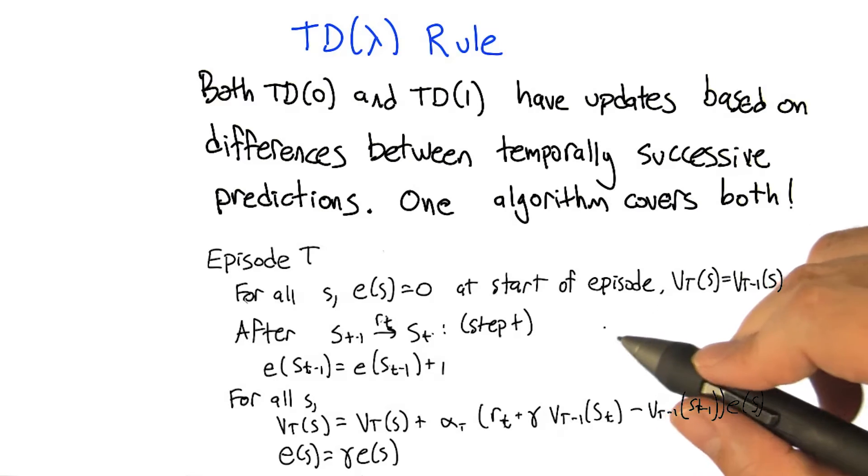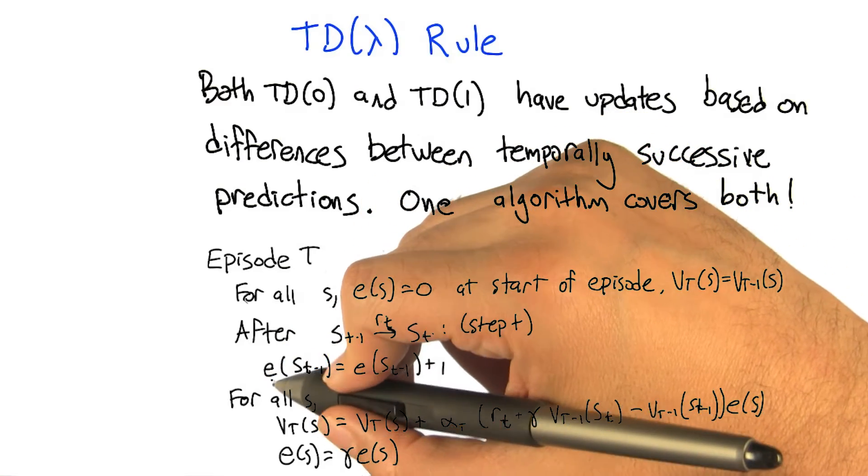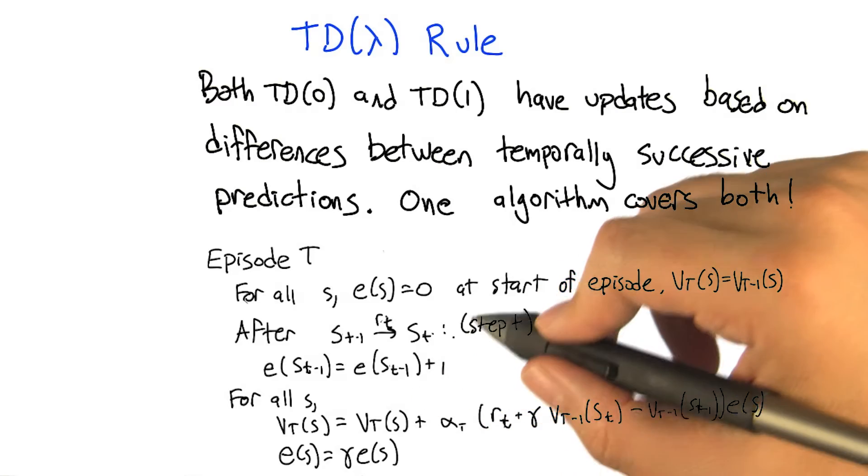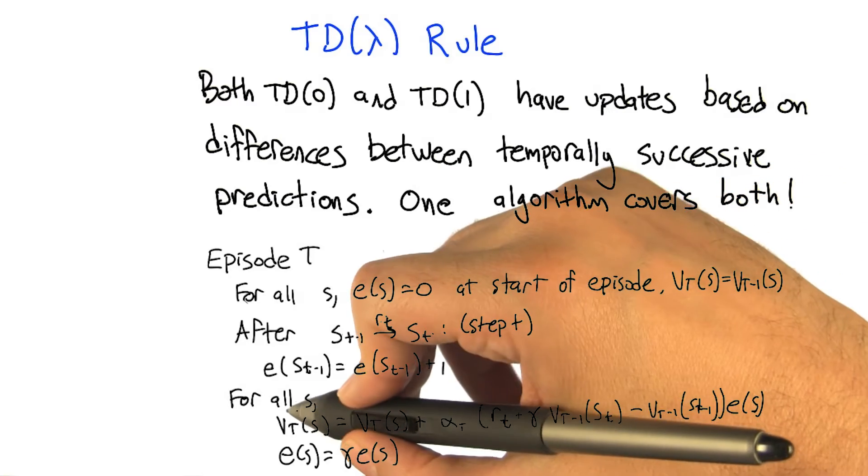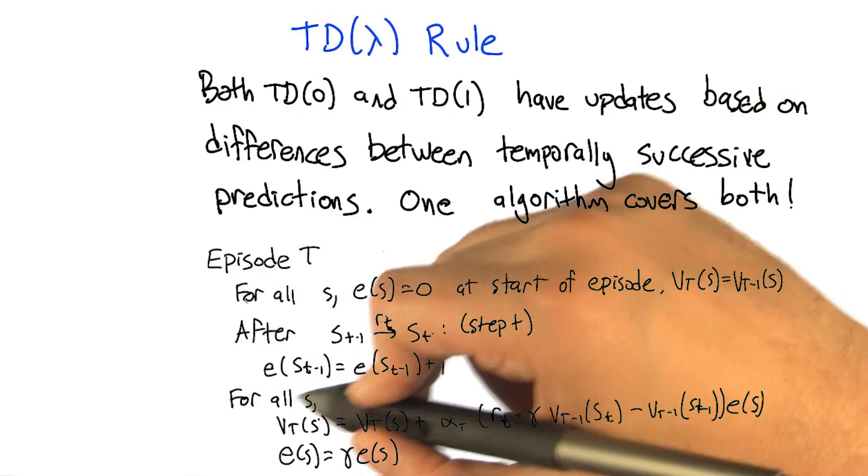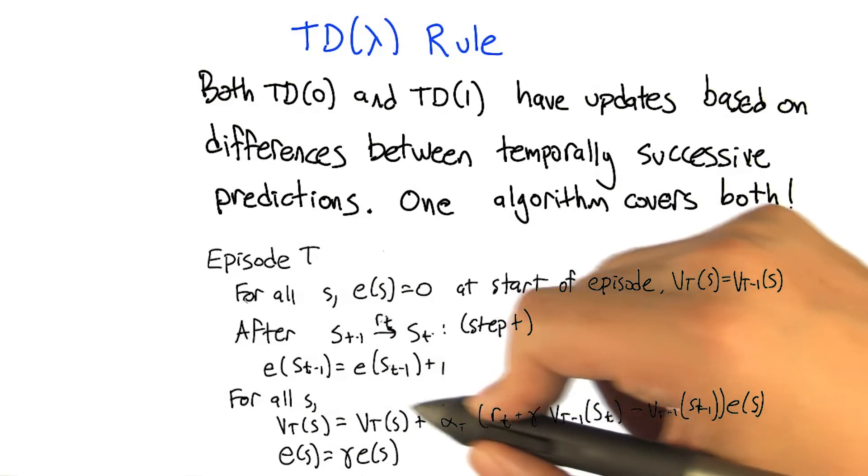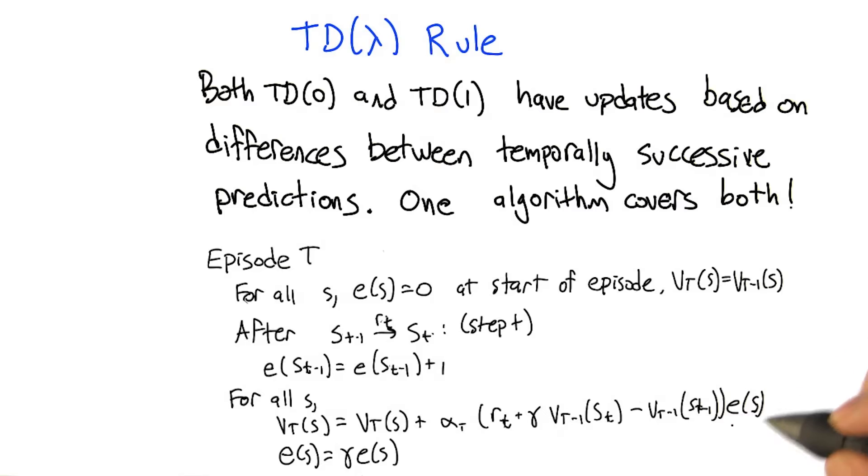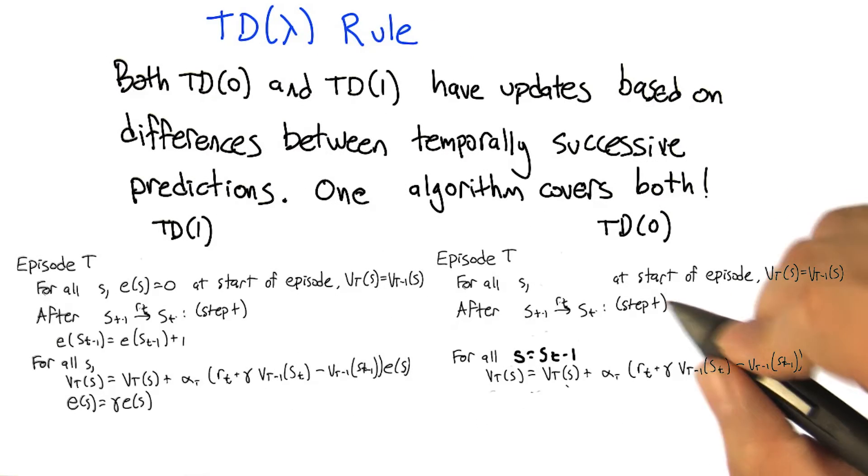Yes, it is easy to tell the difference. So e here, the eligibility, is something that doesn't show up in the TD(0) rule the way that we wrote it, but it does show up in TD(1). This idea that what we're going to do is we're going to update the values for all states, all s, and the amount that we do this same update varies depending on the current eligibility of that state in question. Okay, that seems reasonable. I feel better now.